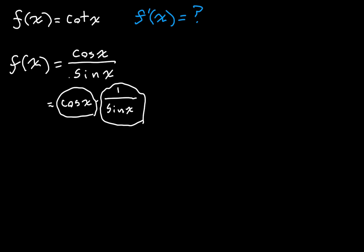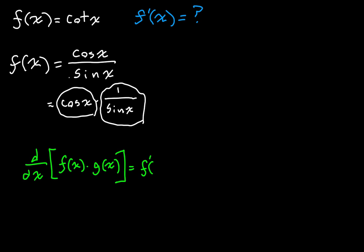It looks like maybe we'd use the product rule, because we have a product that we're taking the derivative of. So if you recall the product rule, I'll write it out: it says that the derivative with respect to x of one function times another function is going to be equal to the derivative of the first function — using prime notation — times the second function, plus the first function times the derivative of the second function.